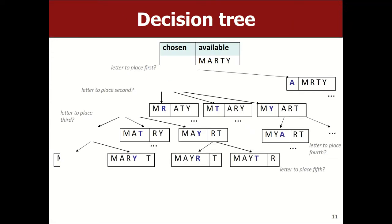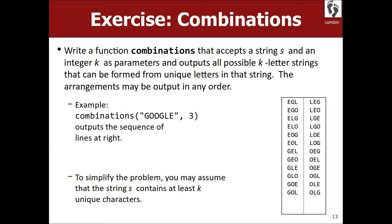Now let's look at a variation on permutations — combinations: unique substrings of a given string with a given number of letters. For example, for 'Google' I want to print all the unique three-letter orderings of any three letters from this string. It's a pretty similar problem, but notice there are duplicates — I don't want to print L-G-O twice because there are two G's. So print all the unique three-letter orderings of any three letters from this string.